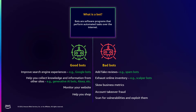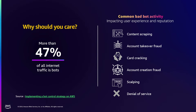Bots are software programs that run on the internet that perform automated tasks. On one side, you have good bots that perform critical functions — like they help you search, they help you collect knowledge and information from other sites. But not all bots on the internet serve legitimate purposes. There are bots which can be used at scale to be part of malicious activities, and those are the ones we commonly refer to as bad bots. These bad bots typically engage in activities that impact your user experience and reputation — content scraping, account takeover fraud, and card cracking are some of the bad bot activities we see commonly.